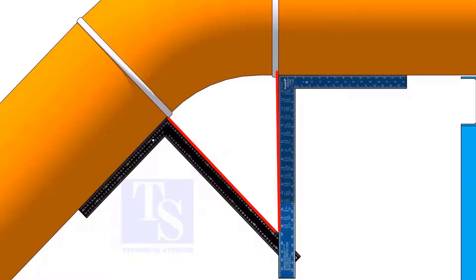Now, measure the distance from the pipe to the point where the two right angles bisect each other. Measure on one side only. That's enough.